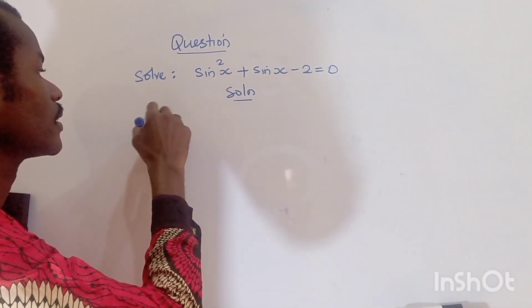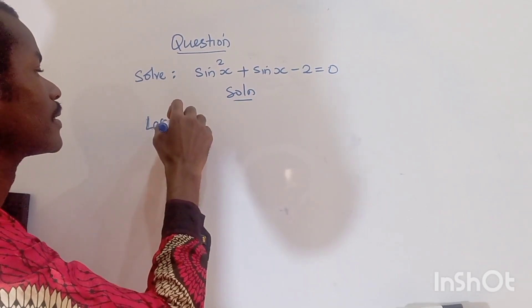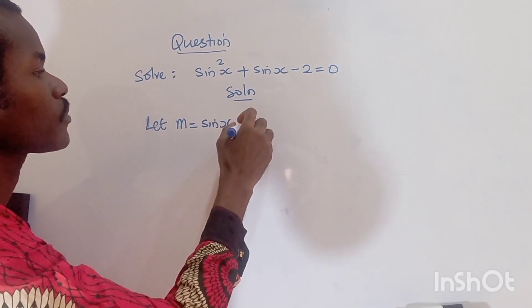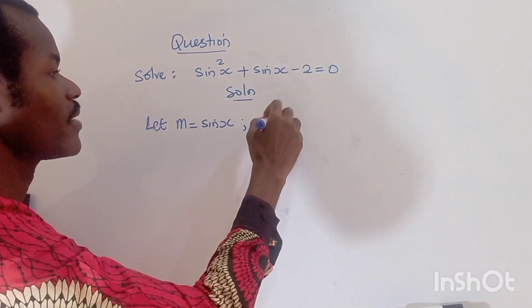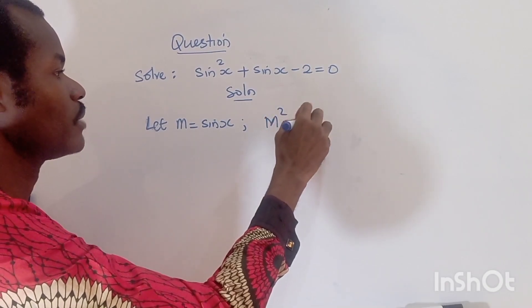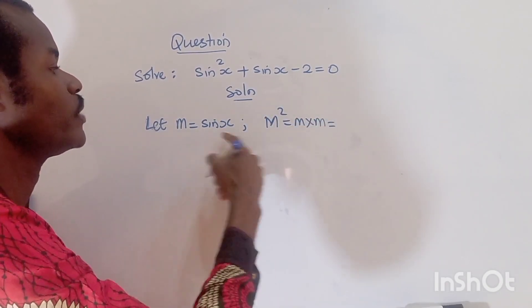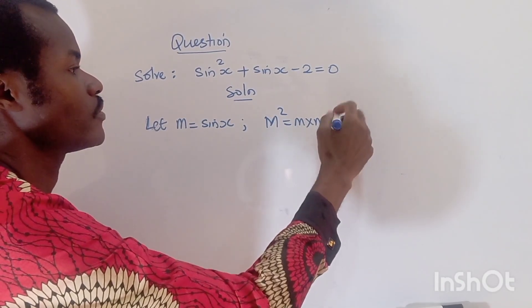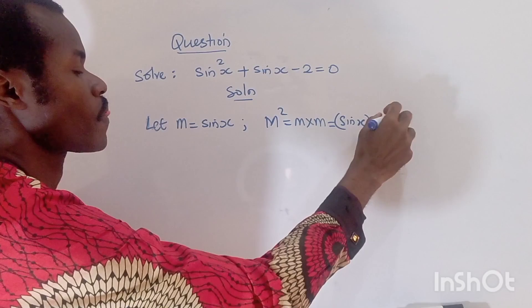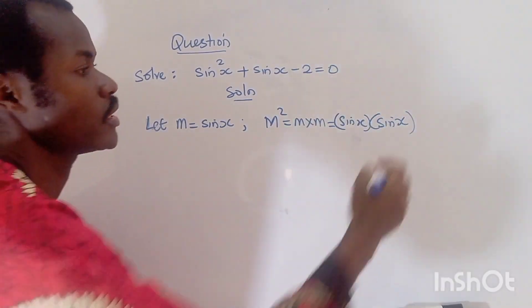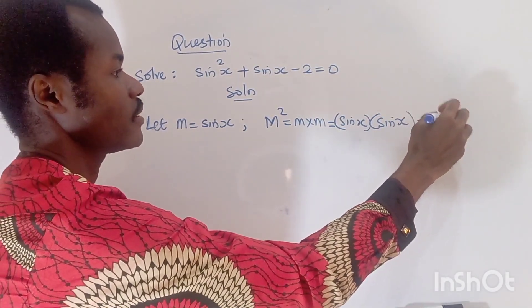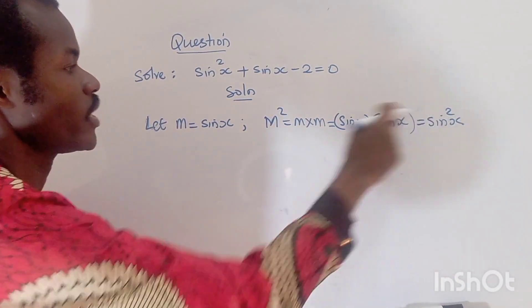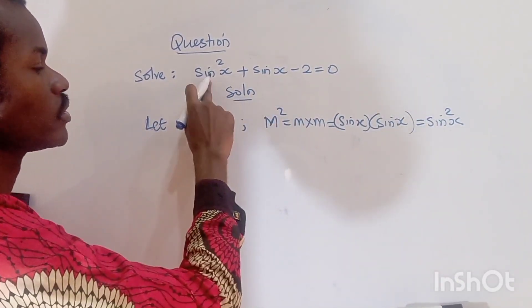What this means is: let m represent sine x. So if m is sine x, then m squared — which is m times m — will give us sine squared x. So we can replace sine squared x with m squared.